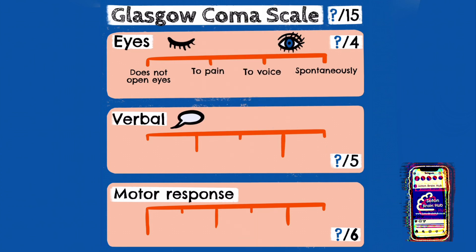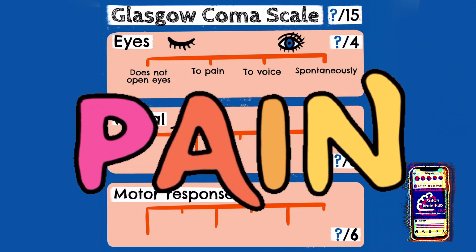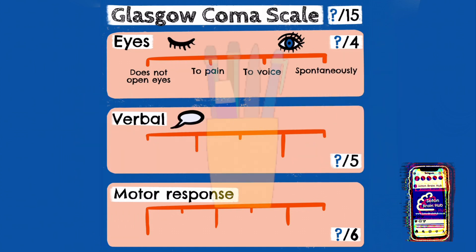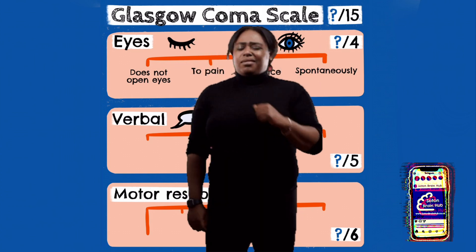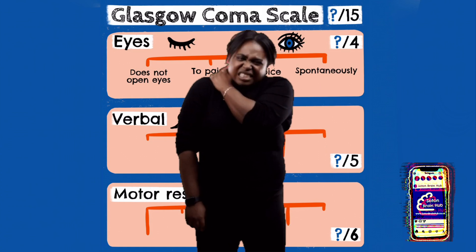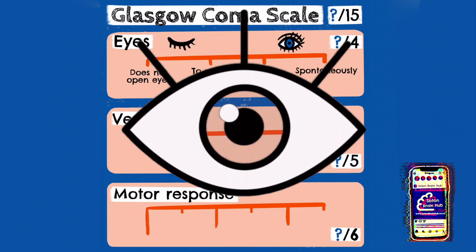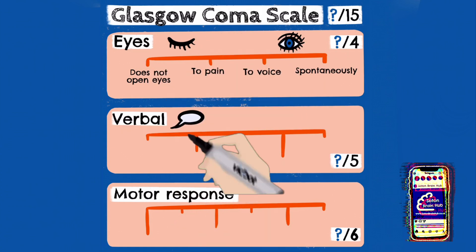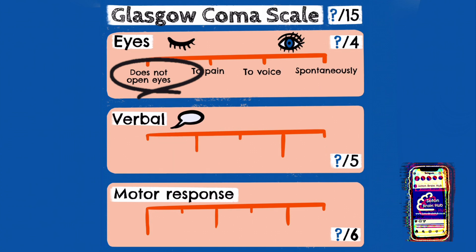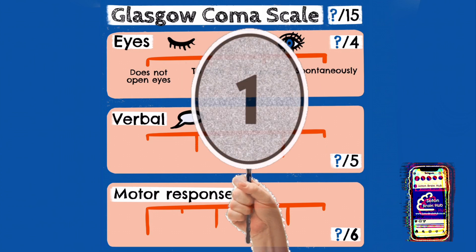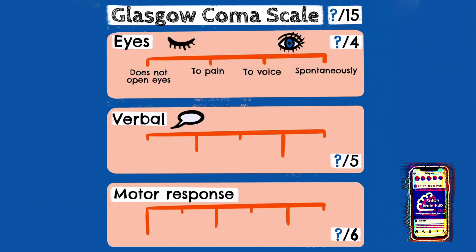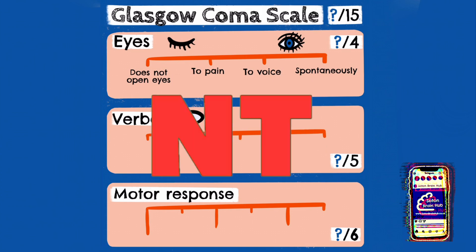If they don't open their eyes in response to sound, you would then assess eye opening to pain. This could be done in a few different ways, either by applying pressure with a pen to fingertips or a trapezius squeeze, which is squeezing of the patient's trapezius muscles. If the patient does not open their eyes at all, this scores 1 point. If they can't open their eyes due to trauma or bandages, you would record it as not testable, NT.